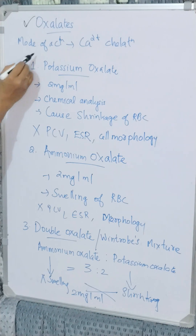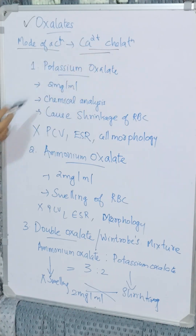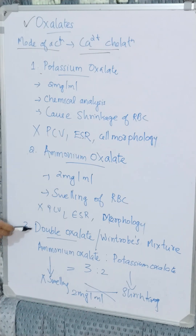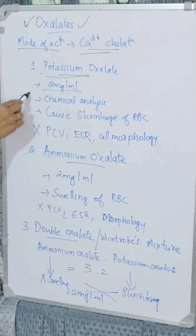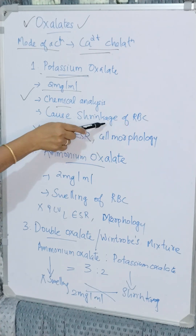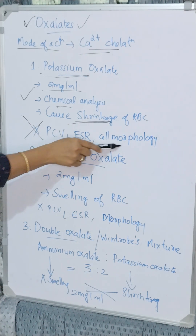Oxalates also act by calcium chelation. They are of three types: potassium oxalate, ammonium oxalate, and double oxalate. Potassium oxalate requires a concentration of 2 milligrams per ml and is used for chemical analysis. However, it causes shrinkage of RBCs, so it cannot be used for PCV, ESR, and cell morphology.